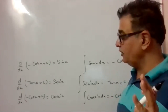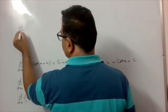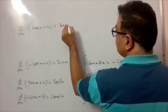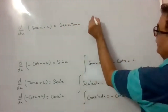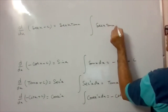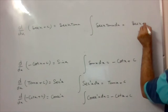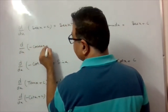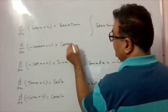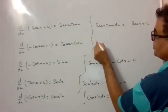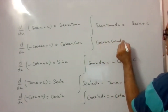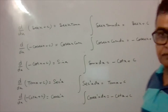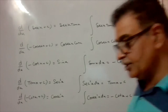We have covered sin, cos, tan, and cot. Next: derivative of sec x = sec x · tan x, so integration of sec x · tan x dx = sec x + C. Similarly, d/dx of (-cosec x) = cosec x · cot x, so integration of cosec x · cot x dx = -cosec x + C.